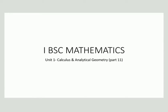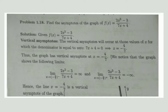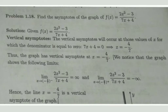In this video we shall solve some problems related to asymptotes. The problem is: find the asymptote of the graph of f(x) = (2x² - 3) / (7x + 4). So we have to find the vertical asymptote, horizontal asymptote, as well as the oblique asymptote.